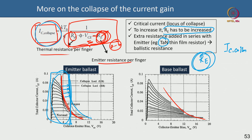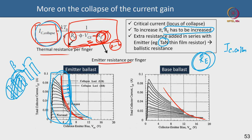This addition of extra series resistance to the emitter to mitigate the collapse is called emitter ballast. Sometimes you can add the series resistor to the base instead — this is called base ballast — and it also helps improve the ballasting condition and delay the collapse of the current gain to some extent. It is important to note that this collapse of the current gain is completely different from the current collapse seen in GaN or GaAs FETs, which involves trapping, detrapping, virtual gate effects, and dispersion — a different physics in a lateral device.